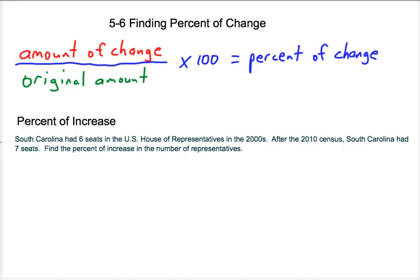Hello, in this video I'll be talking about finding percent of change. The equation we use to find the percent of change is the amount of change divided by the original amount. That'll give us a decimal. We're going to multiply that by 100 to get the percent, and now we have the percent of change.